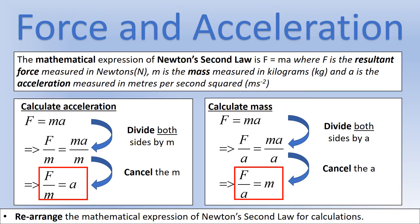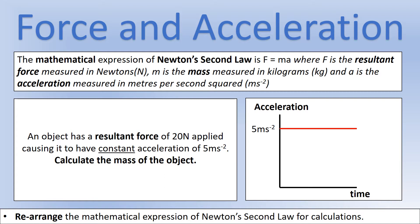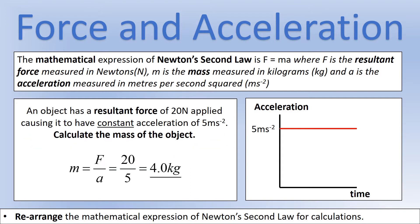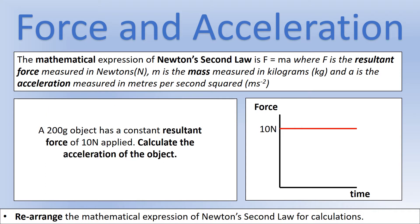Example one: an object with a resultant force of 20 newtons applied to it causes a constant acceleration of 5 m/s². Calculate the mass of the object. Using m = F/a, the force is already in newtons so we put in 20, the acceleration is already in m/s² so we put in 5, and that gives us a mass of 4.0 kilograms.